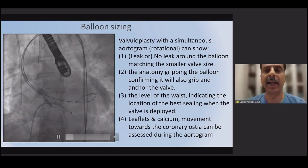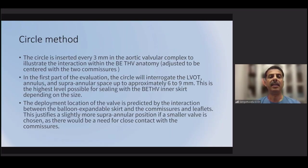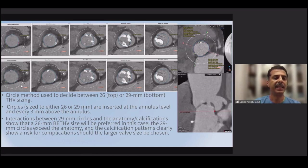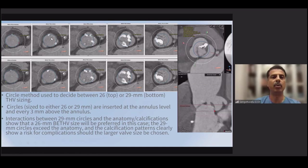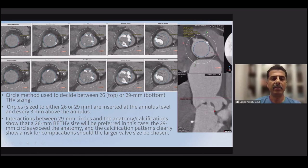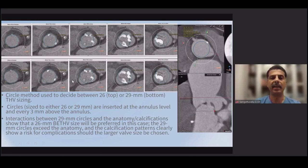A new method described recently is the circle method — a very simple and easy approach that can be analyzed using free measurement software and is useful in reducing complications. Basically, we have two virtual valve sizes to choose: for example, a 26 mm circle and a 29 mm circle. Using the 26 mm circle at different levels of the aortic root, the circle is placed and fits well within the anatomy. Whereas if you use a 29 mm circle, it extends beyond the anatomy — indicating risk of rupture. In this anatomy, we decided to use the 26 mm valve.